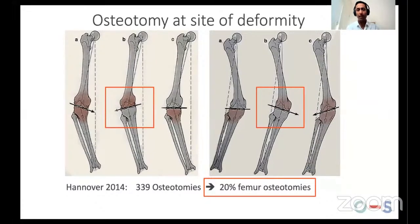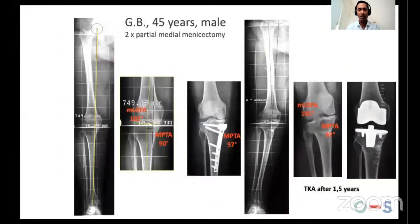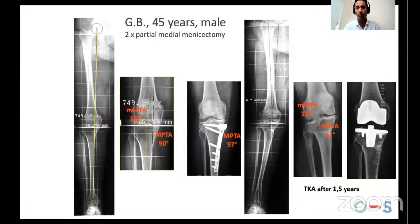Let's get straight into executing our plan. It's vitally important to perform planning for your osteotomy. From the experience of colleagues Christian Clay and Professor Lorbenhofer, a lot of varus malalignment can arise from the femur. In this case of a 45-year-old young patient with varus malalignment, they actually had a normal MPTA but an abnormal MLDFA. This wasn't recognized by the surgeon, and a tibial osteotomy was performed, resulting in a markedly increased MPTA and abnormal joint line. This patient required a total knee replacement at one and a half years.